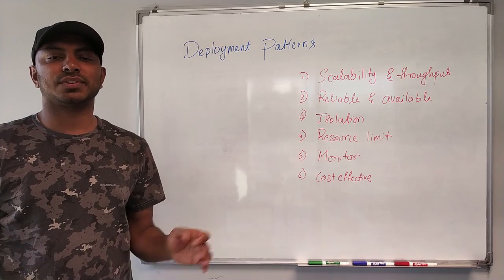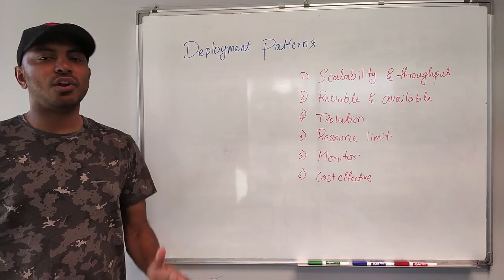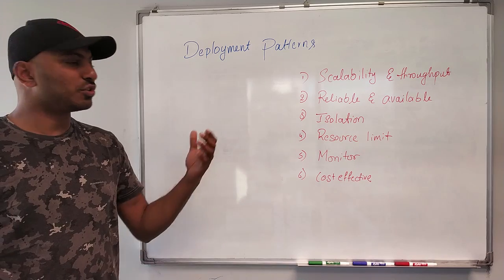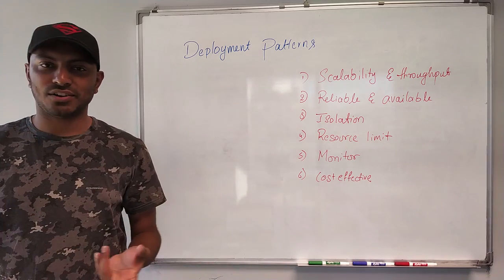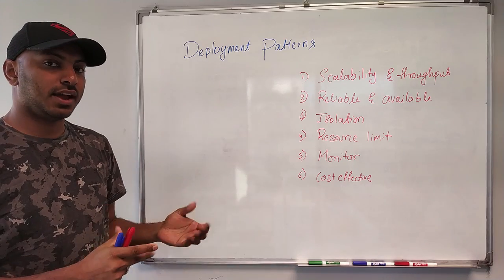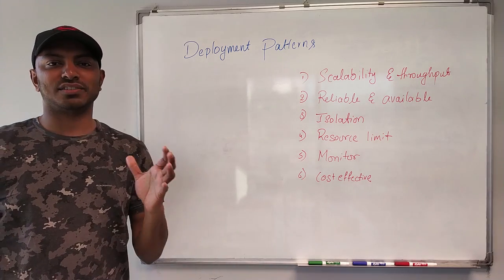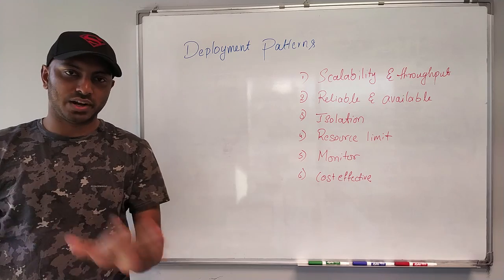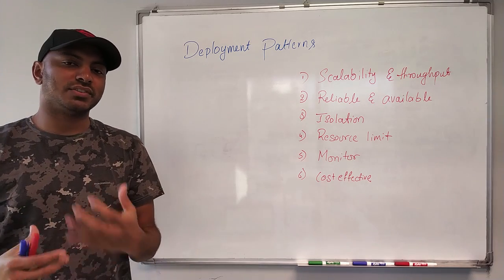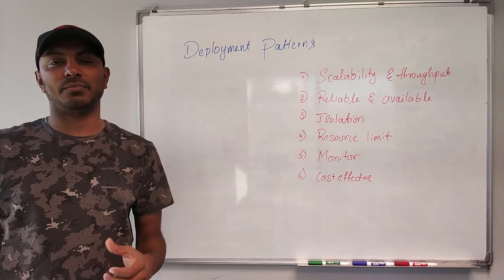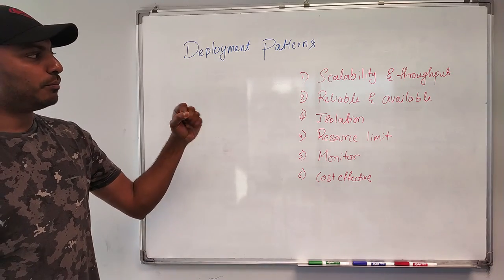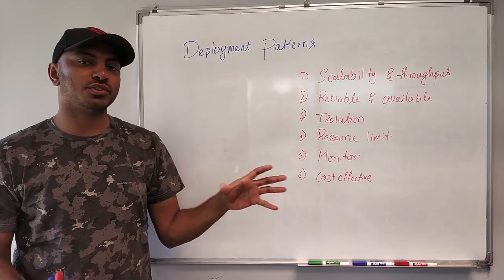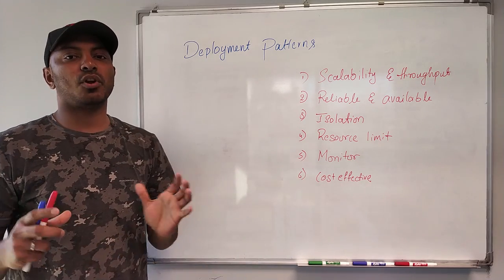So far we learned a lot of different concepts about microservices, and in the end of the session all we have to care about is how to deploy them and then let the third party, the UI, or the other services access these services. For that we need to deploy these microservices somewhere — it could be a server, virtual machine, container, or in the cloud. Before deploying them, we need to set some deployment goals.